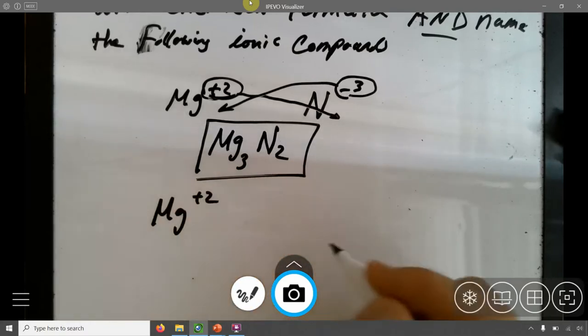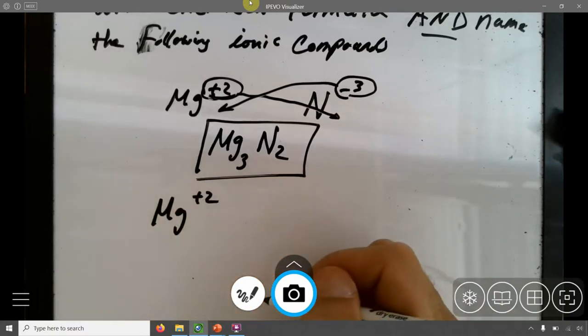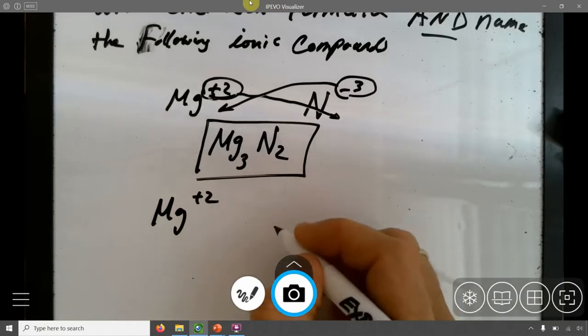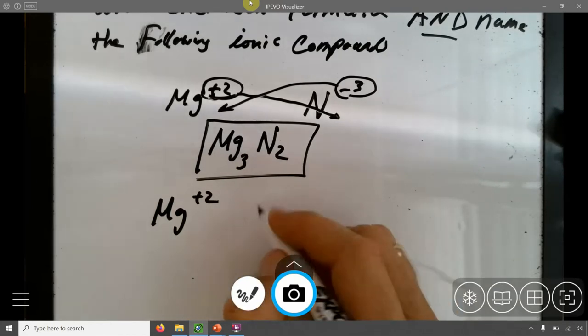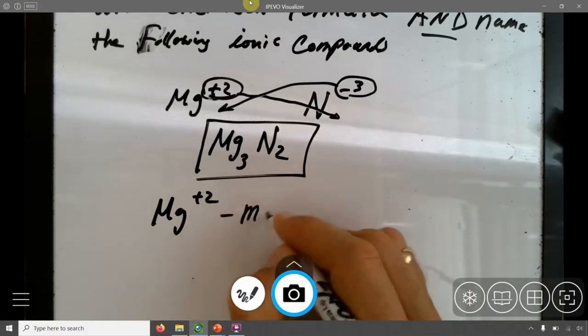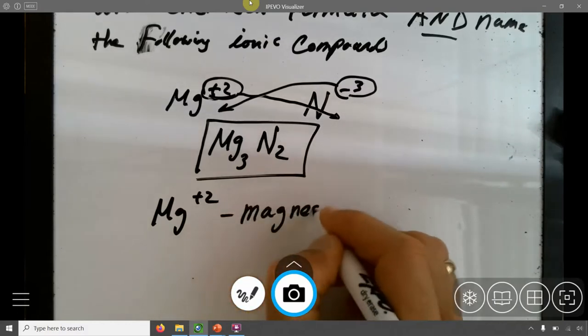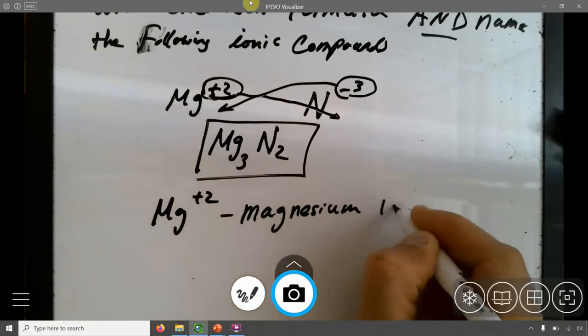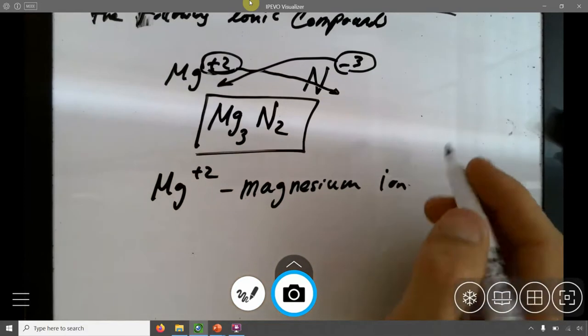So Mg plus 2. Well, this is a group 2. If you look at the periodic table, group 2. And it is a positive ion. So group 2 doesn't require the Roman numerals. It's nice. So this is magnesium ion. I'm going super slow to make sure everyone is on the same page.